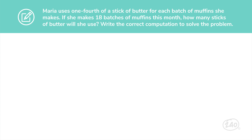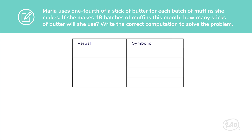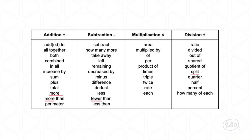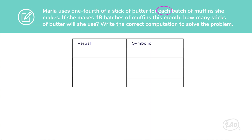Let's try to solve one together. Maria uses one-fourth of a stick of butter for each batch of muffins she makes. If she makes 18 batches of muffins this month, how many sticks of butter will she use? Write the equation that represents this scenario. You'll need to start by picking out key words and phrases. "Each" is a very important word here — according to our table, it means multiplication. If we make b the number of batches and t the total sticks of butter, we can write the equation one-fourth times b equals t.